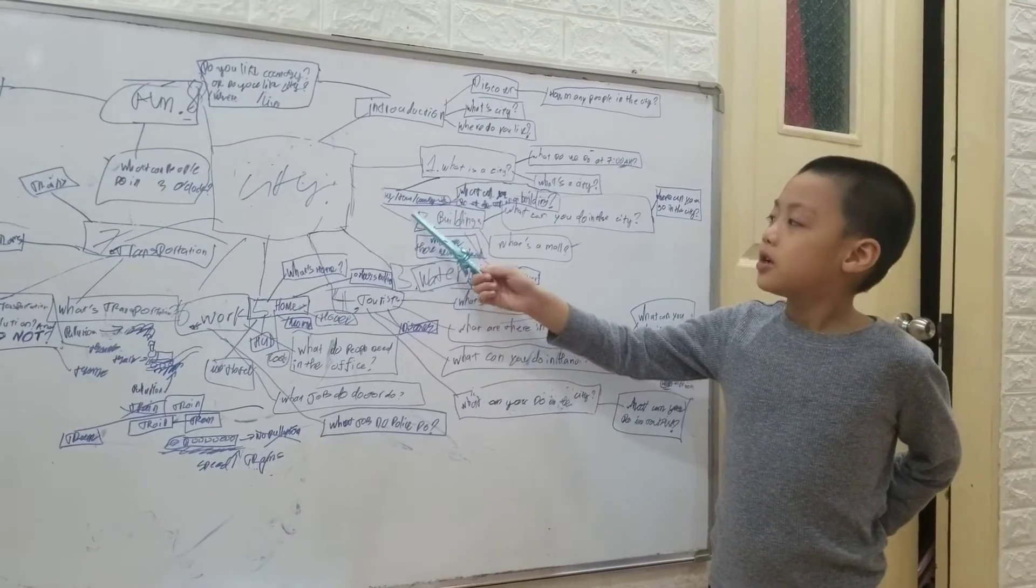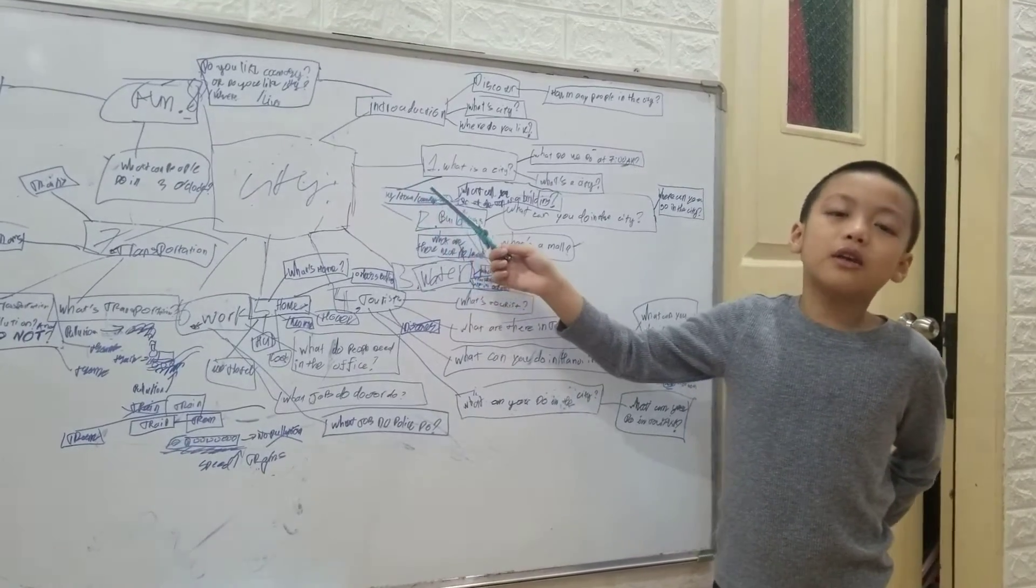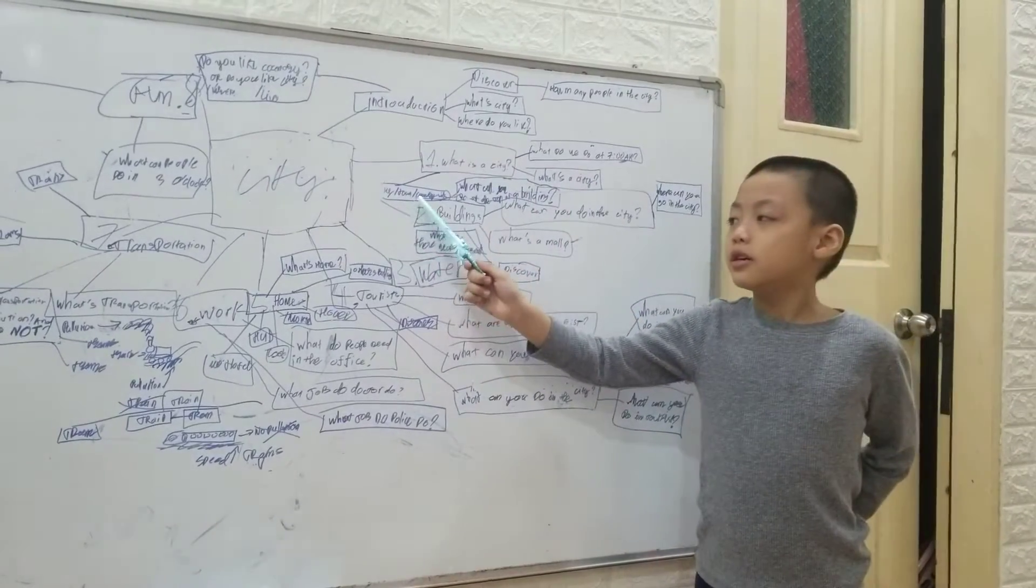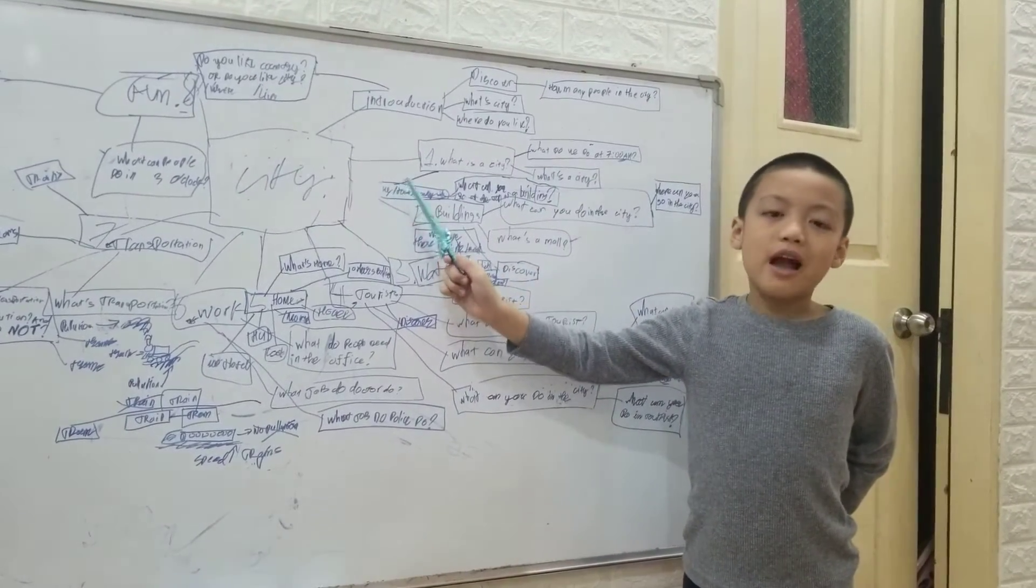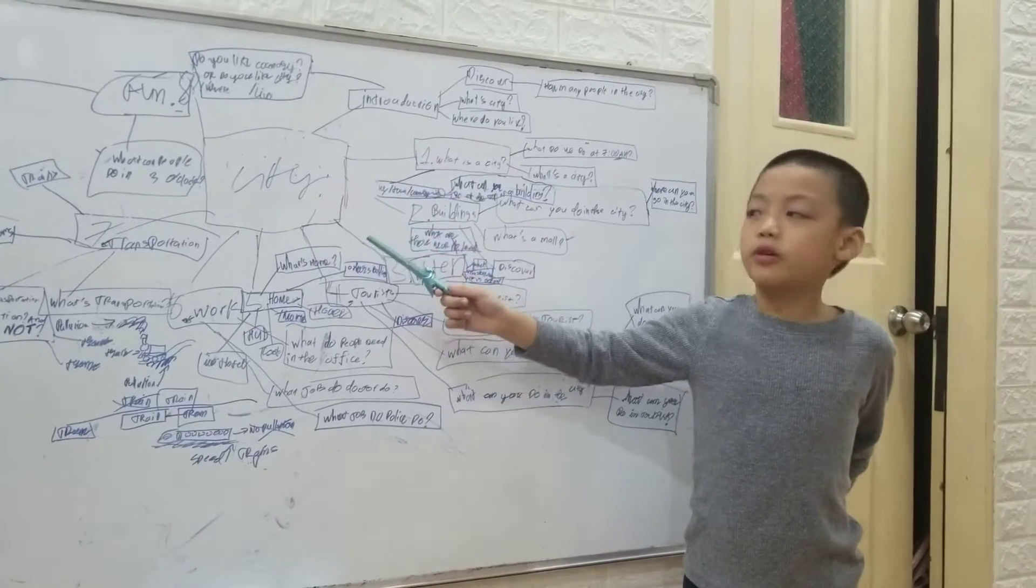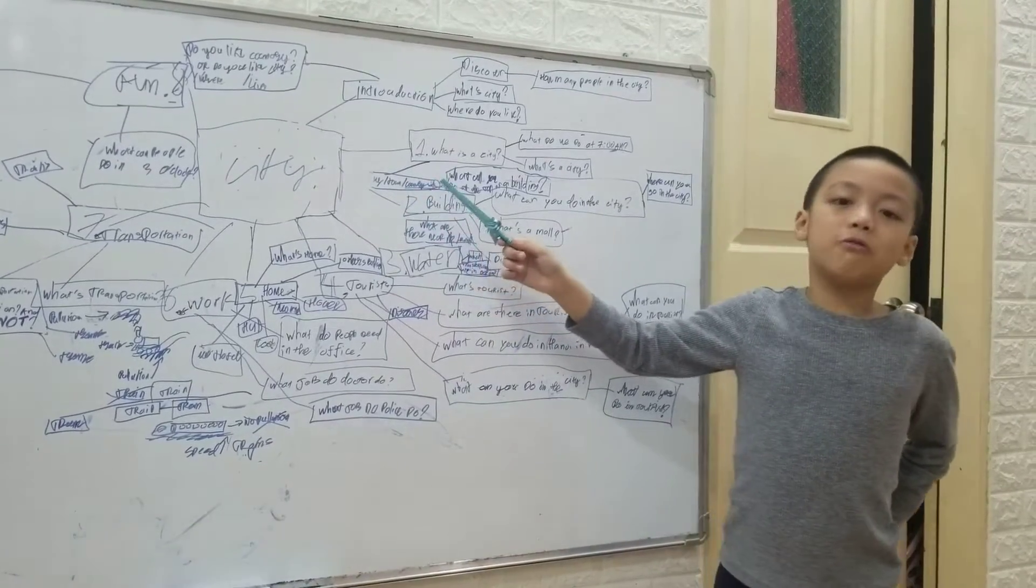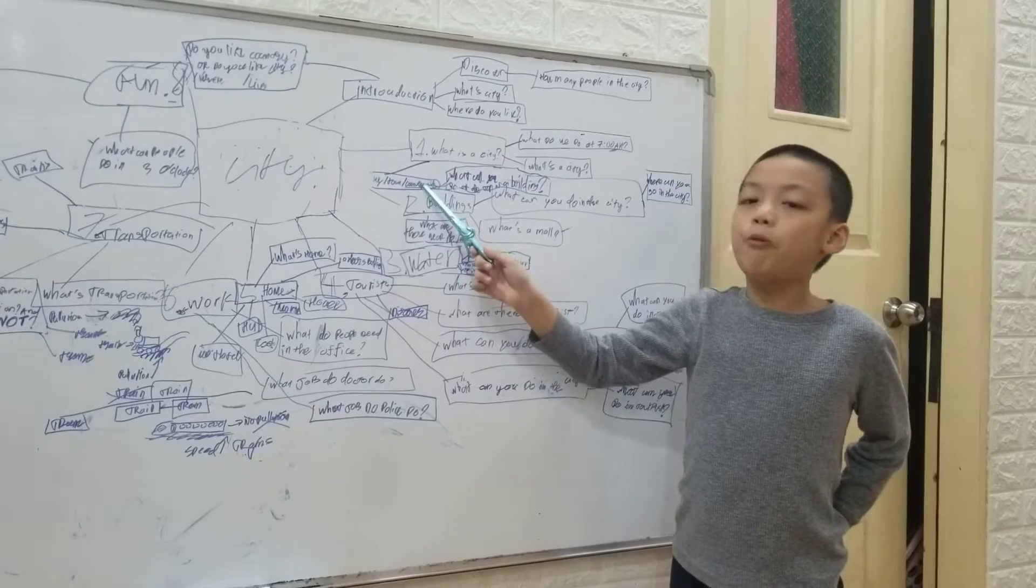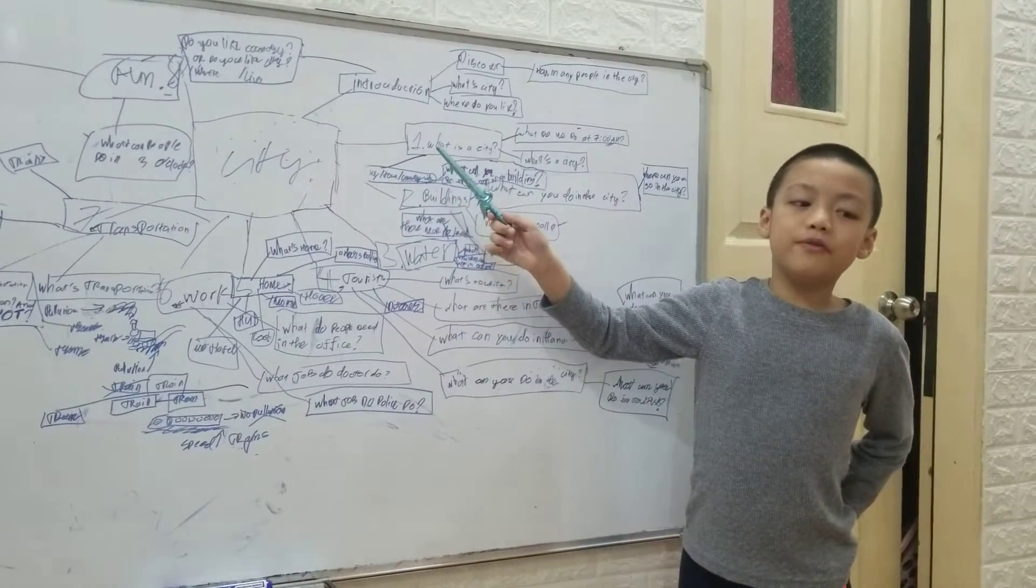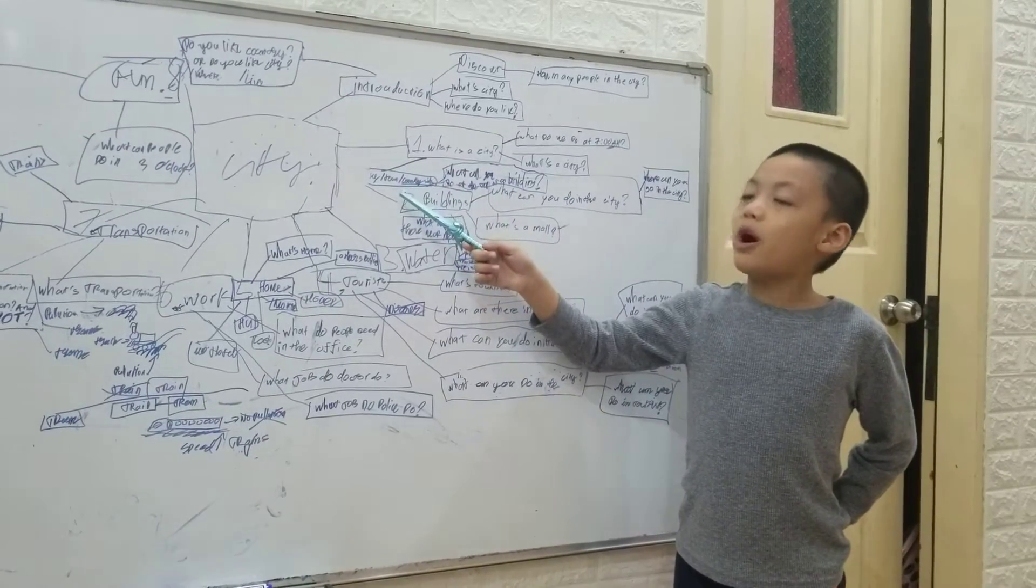I will tell you what the differences are between city, town and countryside. Cities have lots of people, places and transportation. Towns have lots of people too, but it has a giant clock. And countryside is quiet.